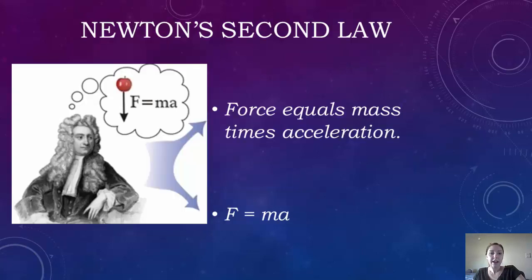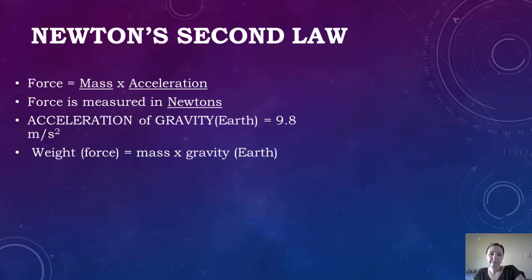So now we're going to look at Newton's Second Law, which is force equals mass times acceleration. Force is measured in newtons. It's important to know that the acceleration of gravity on Earth is equal to 9.8 meters per second squared. You can also look at force as weight — weight is a type of force — and a moon's gravity is one sixth of the Earth's.